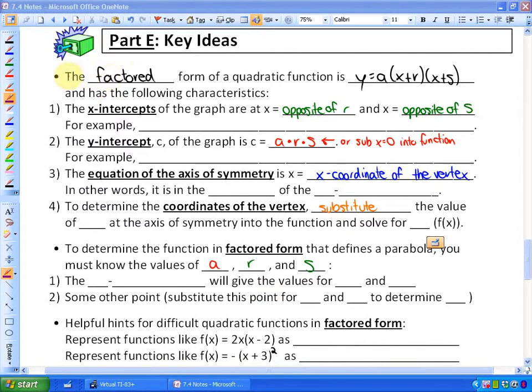The factored form of a quadratic function is y = a(x+r)(x+s) and has the following characteristics - properties you should understand without a graphing calculator. The x-intercepts of the graph are at x = opposite of r, and x = opposite of s.